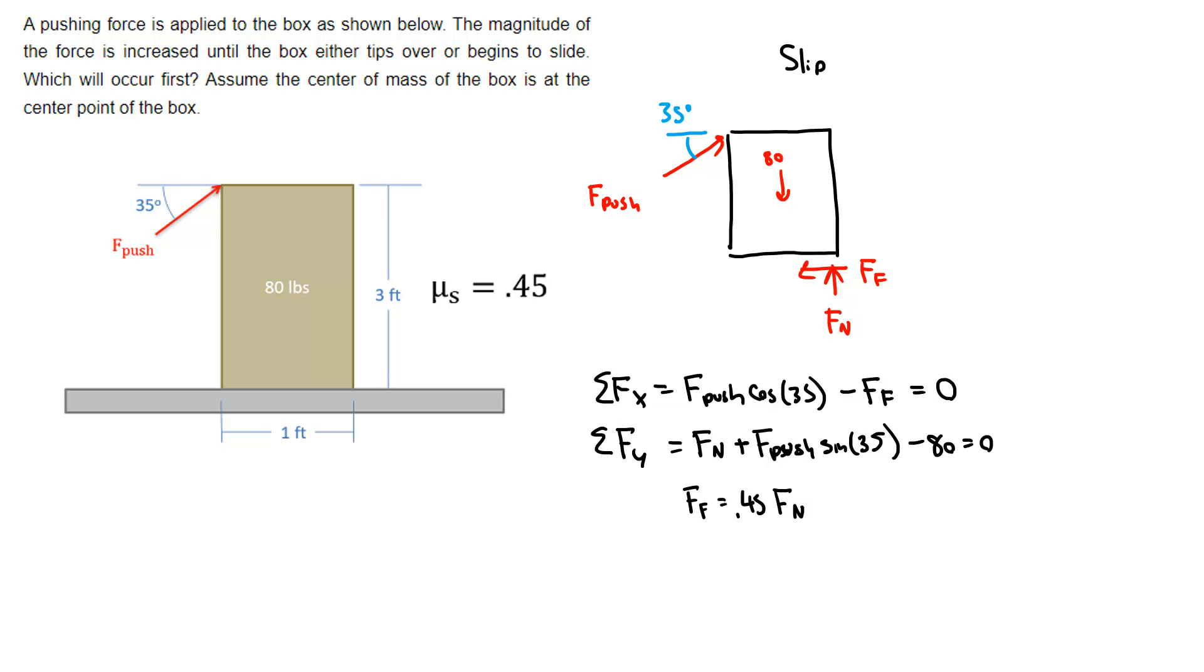So if I take this piece and the sum of forces in the x, I can basically solve and say F_push is going to be equal to 0.45 over cosine 35 times whatever Fn is. That's basically this piece substituted in for F_f, and then I divide by cosine 35.